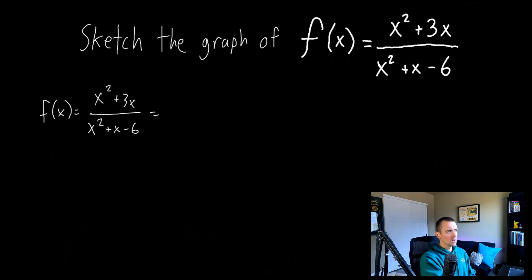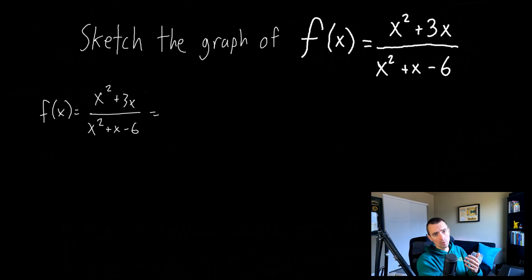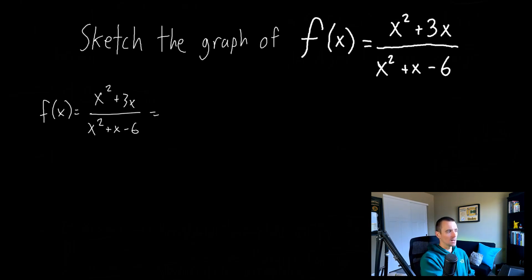If you only have two terms, in general when you're factoring, the first place you usually want to start is to look for a greatest common factor — something that each term within that polynomial is divisible by. When you only have two terms, that's even more going to be the case. Looking at this numerator, you can see that both x² and 3x have an x in them, so we can factor out the x. If we pull x out of x², that leaves us with x inside the parentheses. And if we pull x out of 3x, we're just left with plus 3. So x² + 3x factors to x(x + 3).